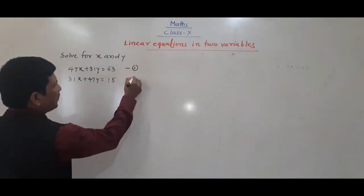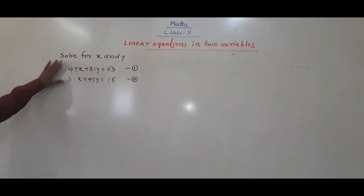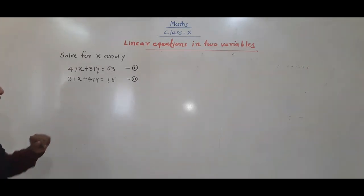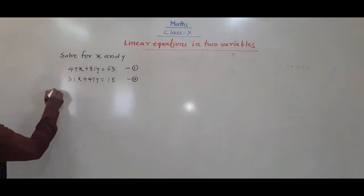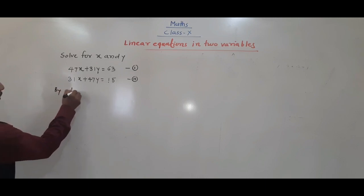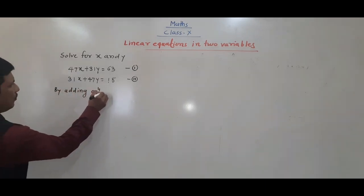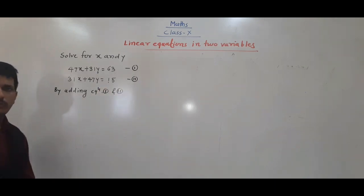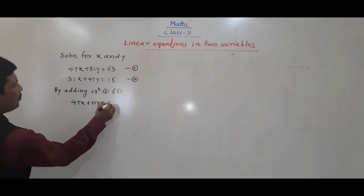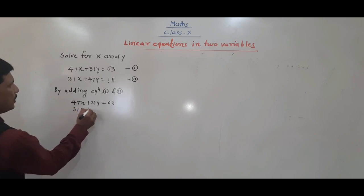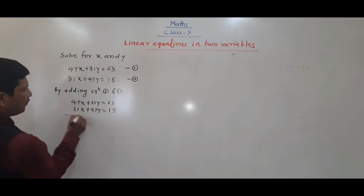This is the first equation and this is the second equation. When such type of conditions arise, we need to do addition of both equations once, and subtraction of both equations once. Here, first I am adding equation 1 and 2: 47x + 31y = 63 plus 31x + 47y = 50.